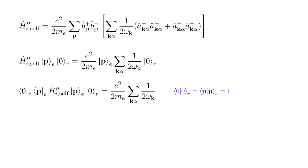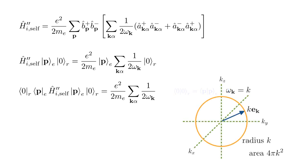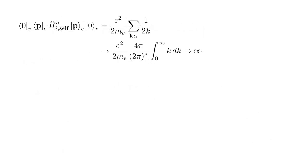Projecting this onto our quantum state, we obtain e-squared over two m-e, times the sum over all photon states of one over two omega k. In our units, omega k equals the magnitude of k. For a given omega k, we sum all states over a sphere of area four pi k-squared. The sum over the two polarizations for each state gives us a factor of two. And the sum over k values becomes one over two pi cubed, times the integral over all k of four pi k-squared.